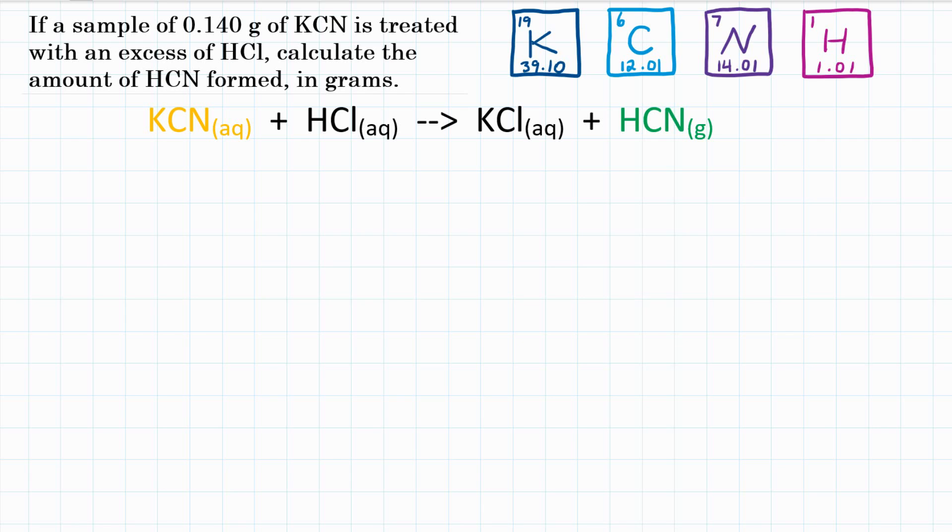The problem says you have 0.140 grams of KCN, potassium cyanide, and an infinite amount of hydrochloric acid, and they want you to calculate the amount of HCN, hydrogen cyanide, in grams. This is a stoichiometry problem, we're going to be going mass to mass, mass of one reactant to the mass of one product.